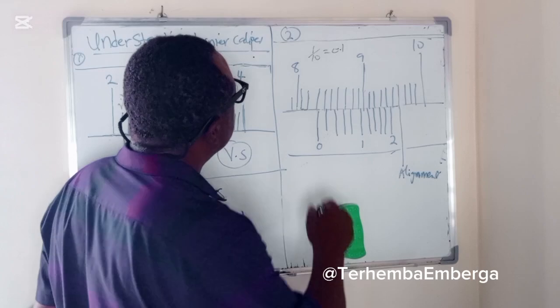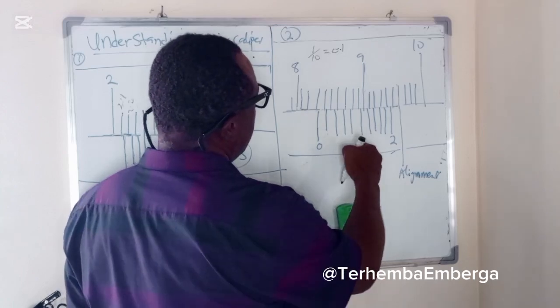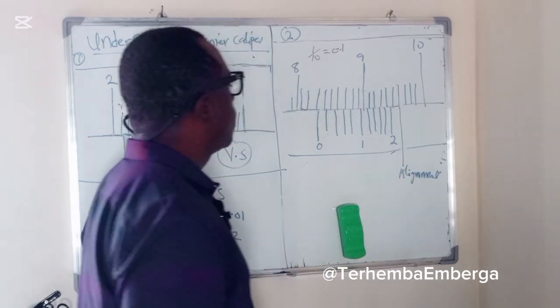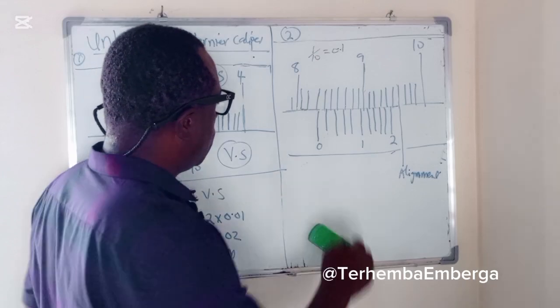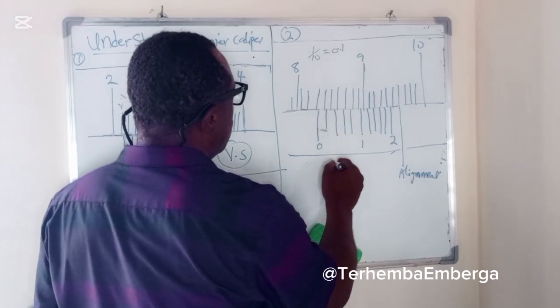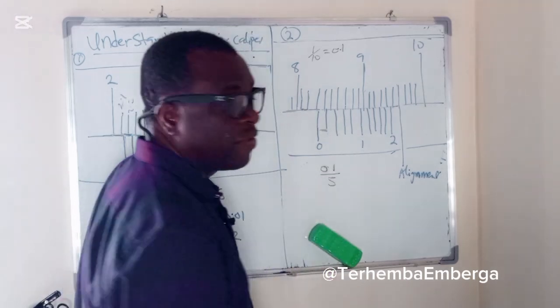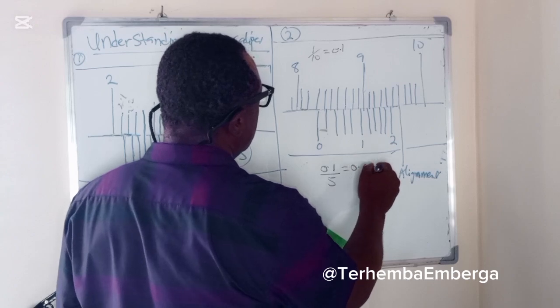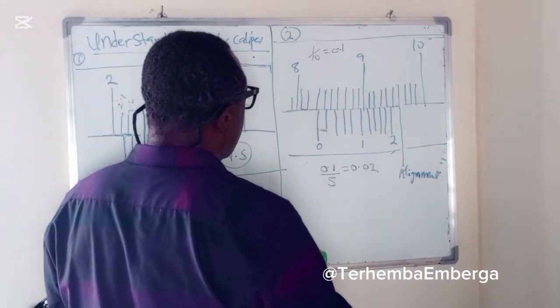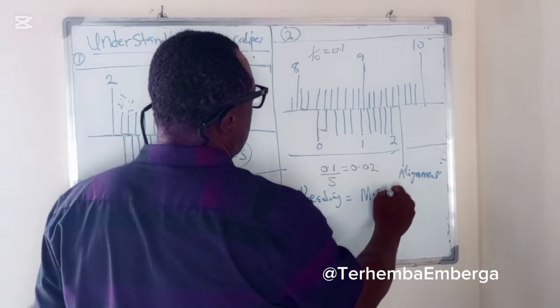Then on the vernier scale, this is zero point. You have divisions marked as 1, 2, 3. So what is the dimension between these divisions? Remember, up there we have 0.1. Since we have 5 divisions, you divide by 5, and this is equal to 0.02. So the reading here becomes main scale plus vernier scale.